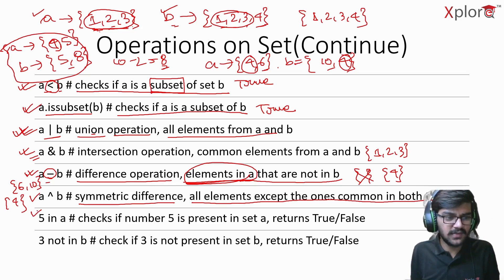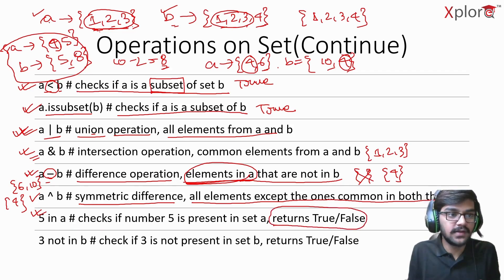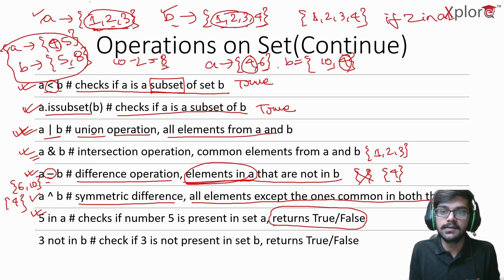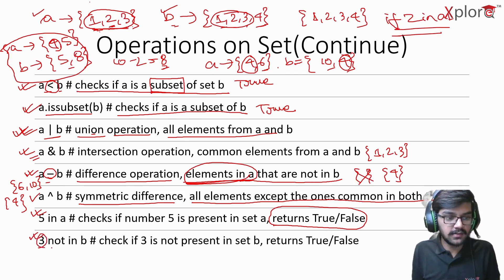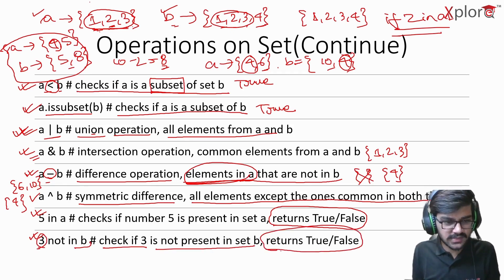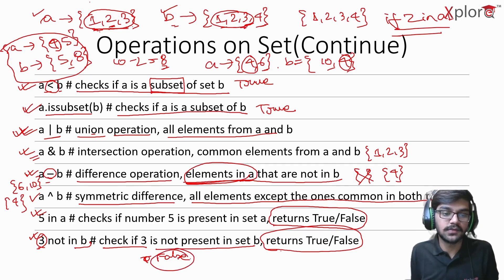The membership test '5 in a' checks if 5 is present in set A and returns True or False. For set A = {1, 2, 3}, '5 in a' returns False, but '2 in a' returns True. You can also use 'not in': '3 not in b' checks if 3 is absent from set B. Since 3 is in B, this returns False.